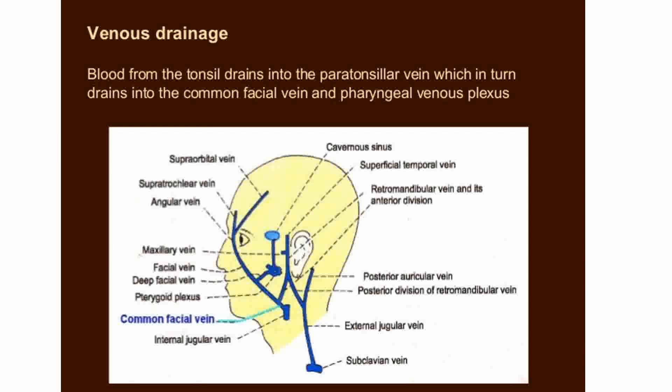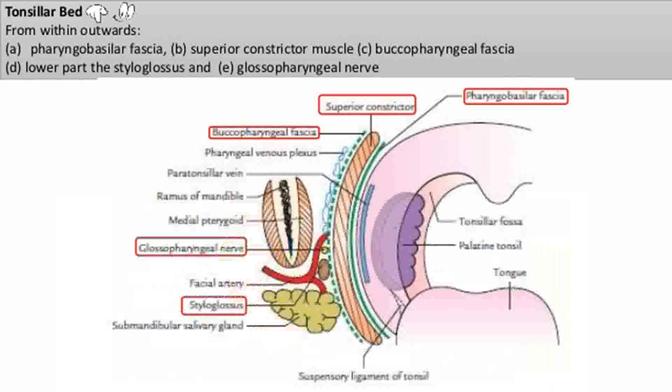Next is the venous drainage of the tonsil. The tonsil drains into the paratonsillar vein, which in turn drains into the common facial vein and the pharyngeal venous plexus. The common facial vein finally drains into the internal jugular vein. The paratonsillar vein is present in front of the pharyngeal basilar fascia; blood from the tonsil drains into it, and this vein pierces the superior constrictor muscle to drain into the pharyngeal venous plexus, which lies behind the buccopharyngeal fascia.